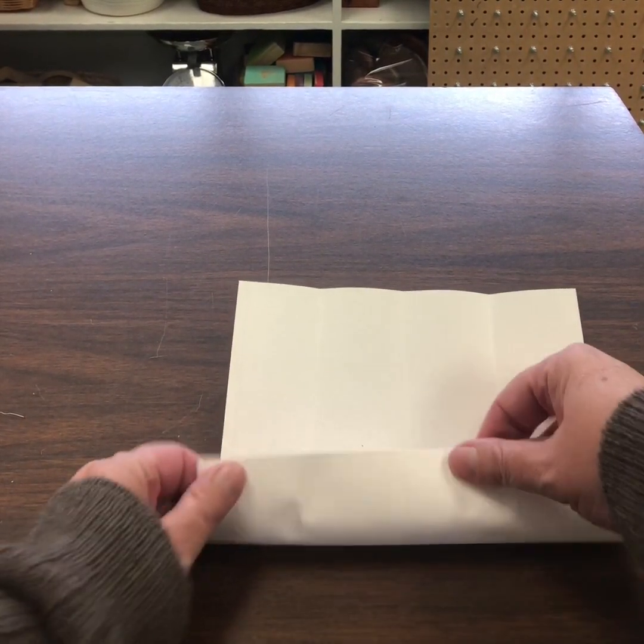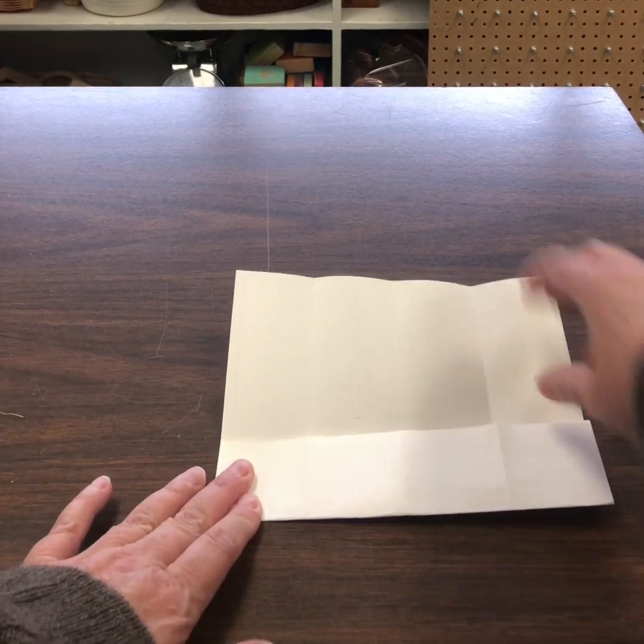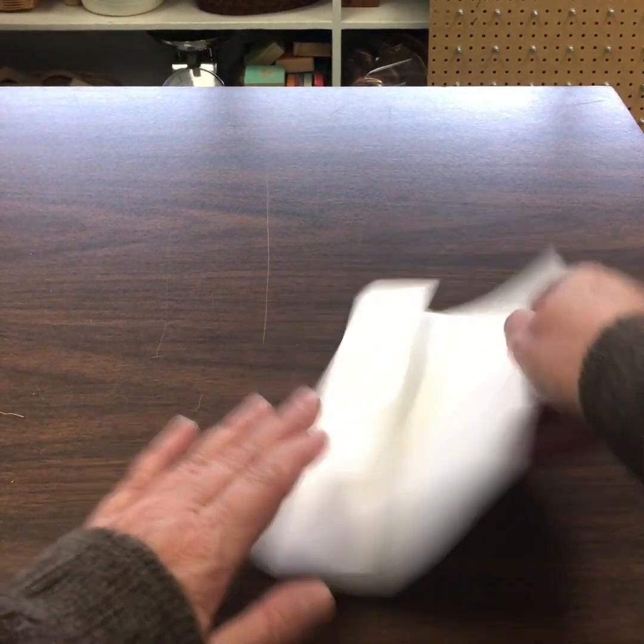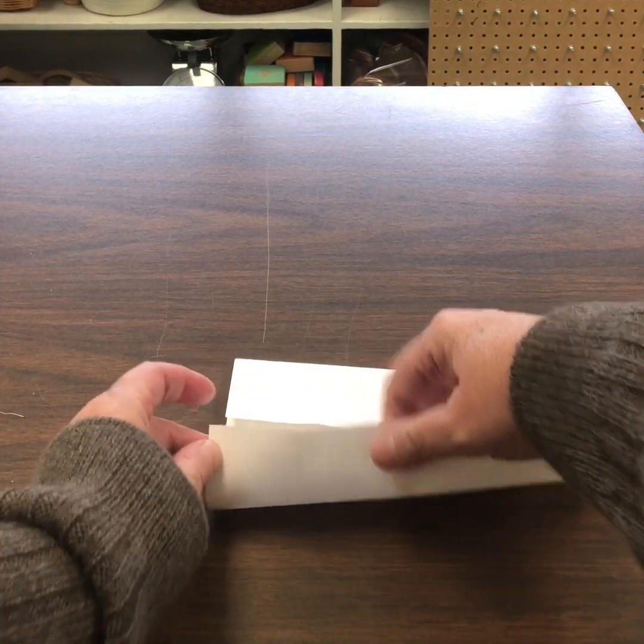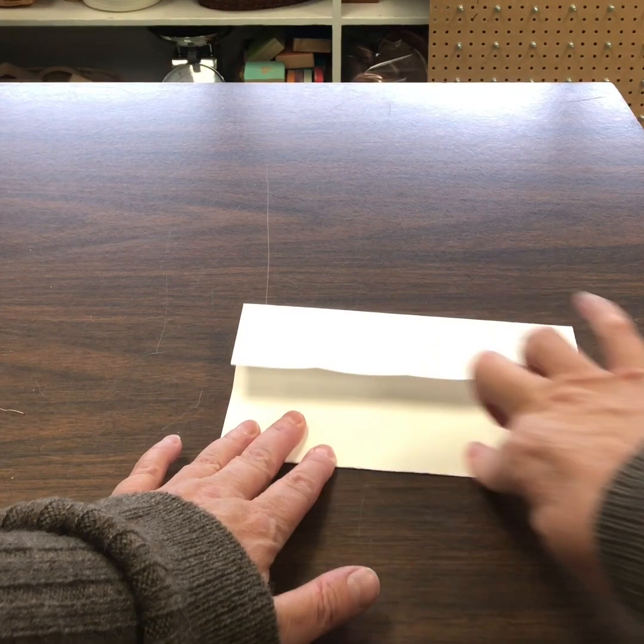And then we're going to take from the bottom, fold up to the center line. And then from the top, I find it easier sometimes to turn it around and then do it again from the bottom up to the center line and across.